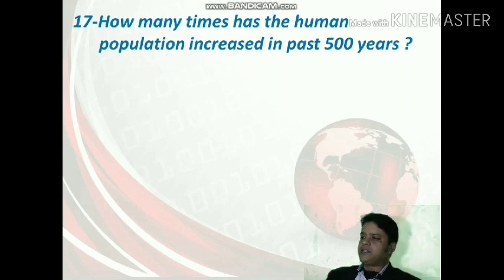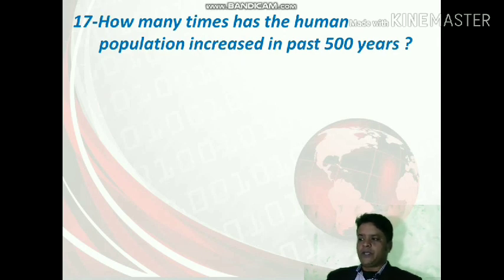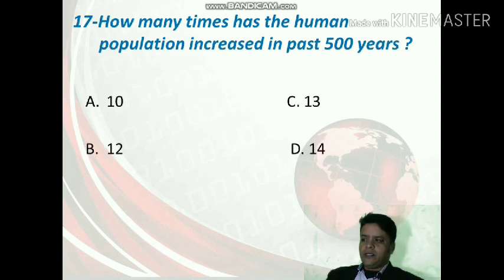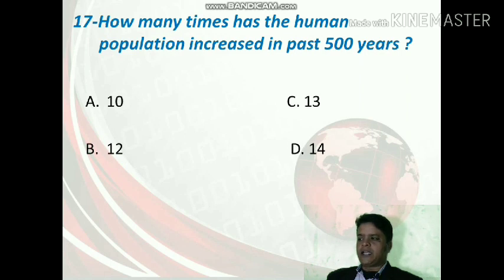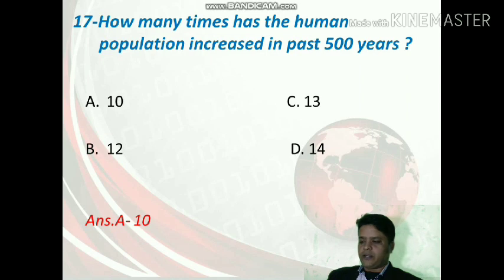How many times has the human population increased in the past 500 years? The options are 10, 13, 12, or 14 times. The correct option is A — the population has increased 10 times in the last 500 years.